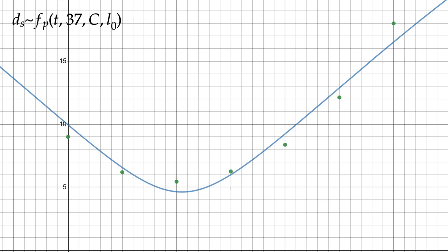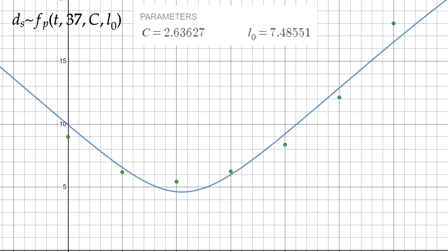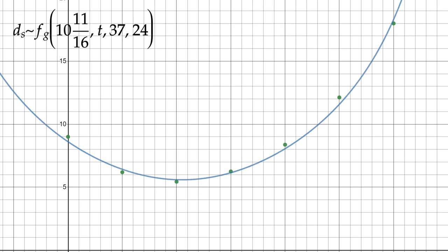It's extremely important to notice in the graph of fp, the computer's given full control of c and L0 to maximize the R squared value of this regression, meaning that this is the absolute best possible scenario you could ever hope to come up with on a flat earth, and any other fudging would only make the graph more inaccurate. That being said, this is the graph of fg as ds approximates fg of 10 and 11 sixteenths, t, 37, and 24.